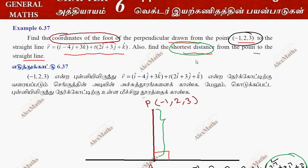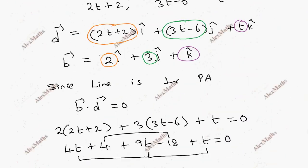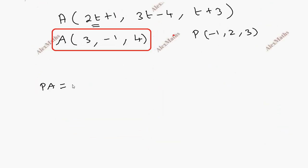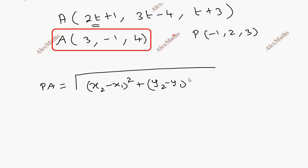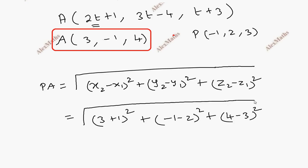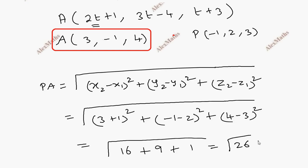Now find the shortest distance. The length PA is found using the distance formula: PA equals root of (x2 minus x1) squared plus (y2 minus y1) squared plus (z2 minus z1) squared. Substituting both points: root of (3 minus minus 1) squared plus (minus 1 minus 2) squared plus (4 minus 3) squared, which equals root of 16 plus 9 plus 1, giving root 26 units.